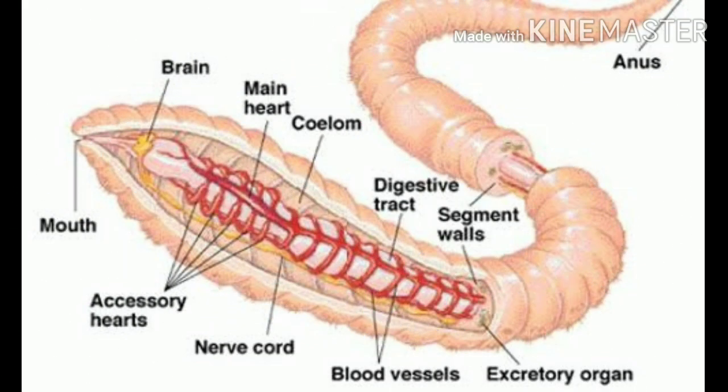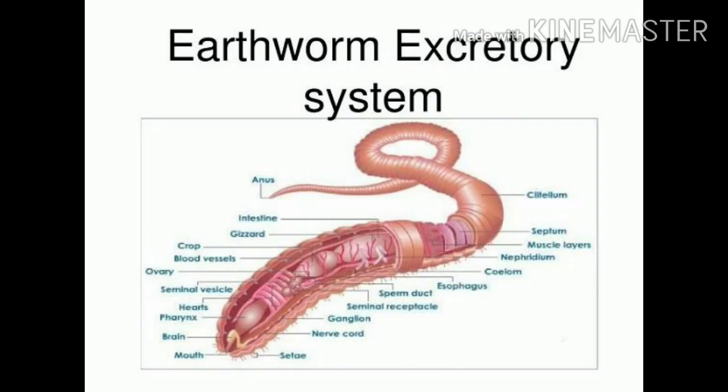In simple multicellular organisms, for example earthworm, there are tubular structures called nephridia which work as their excretory organs. Apart from these nephridia, they also have moist skin which acts as the excretory organ.